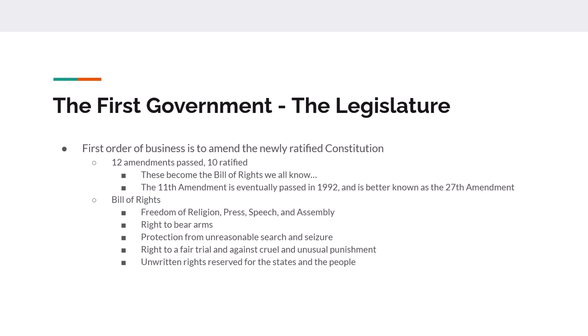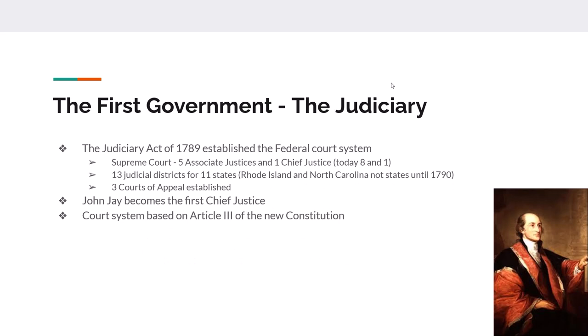That's the Bill of Rights we have today — the right to free speech, the right to bear arms, protections from search and seizure, freedom of religion, etc. The first 12 Amendments are passed, 10 of them are ratified, and those 10 become the Bill of Rights. For the Judiciary, the Judicial Branch is established with the Judiciary Act of 1789, which put Article III of the Constitution into effect.